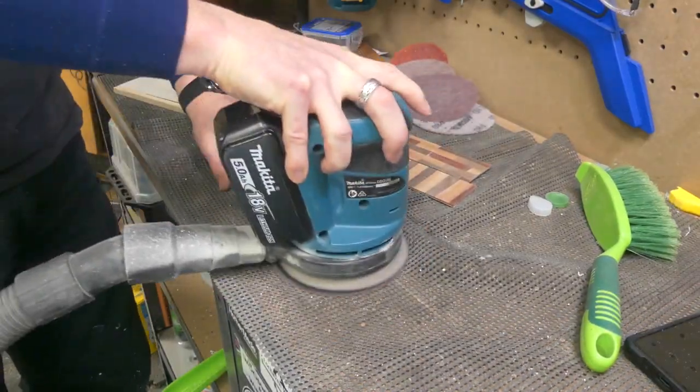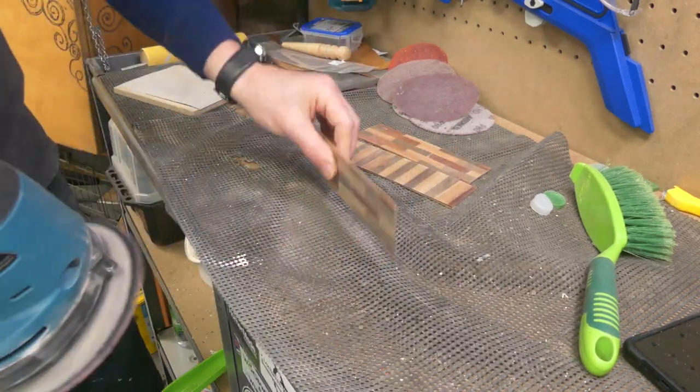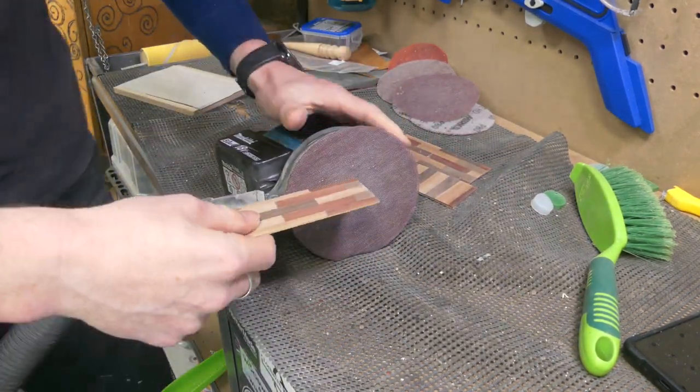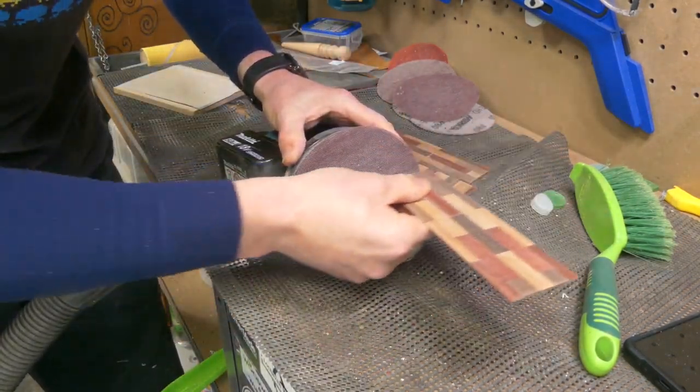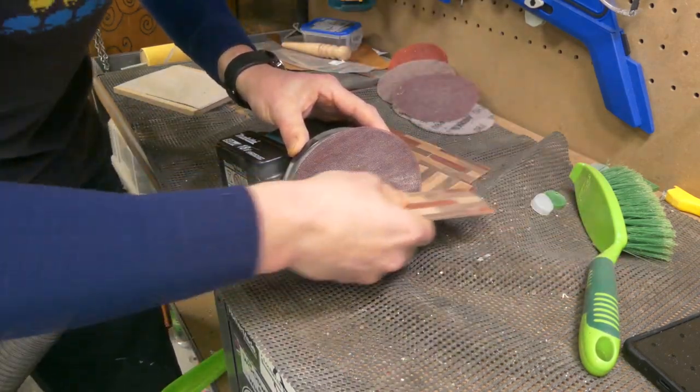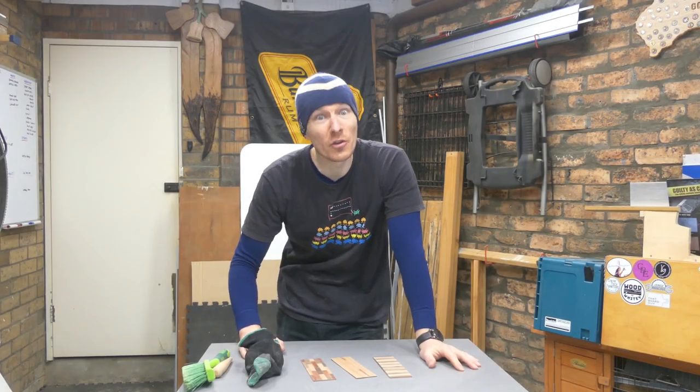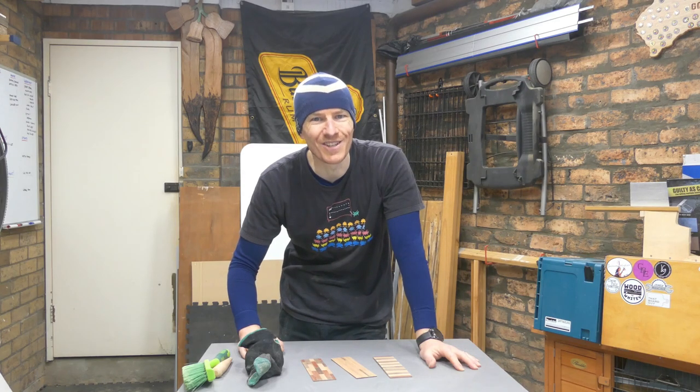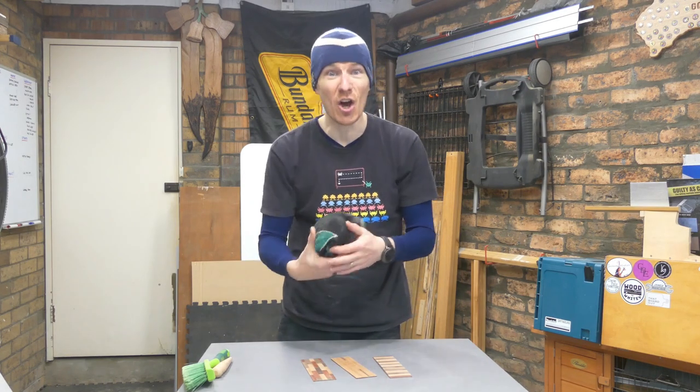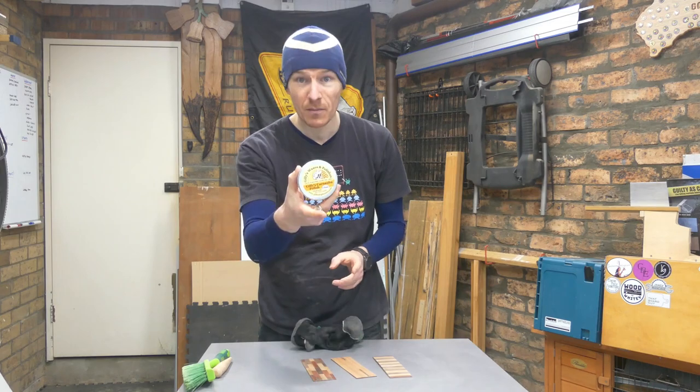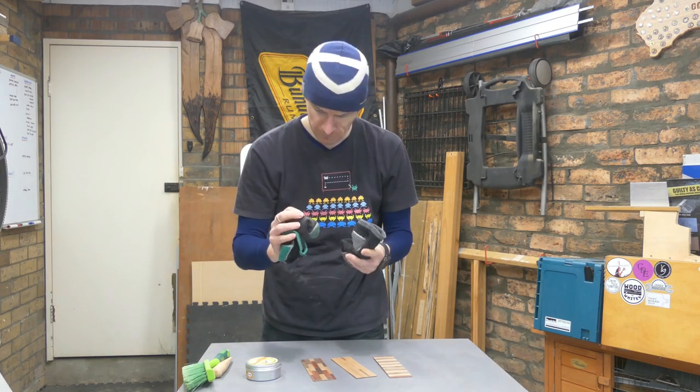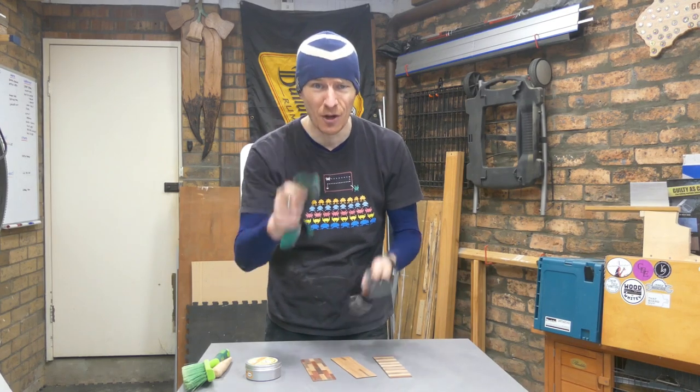The scraper did most of the work, then 120 grit sandpaper brought it down, and I could rework my way back up through the grits to 320 and finish with a little hand sand of the edges. And finally, we've got what I call the two-sock method for wax application: socks, bit of Gilly's wax, buff on, buff off. No, wait - buff on, buff off.